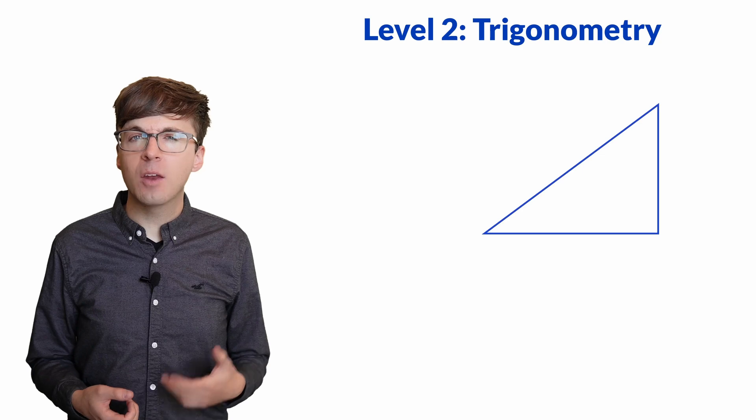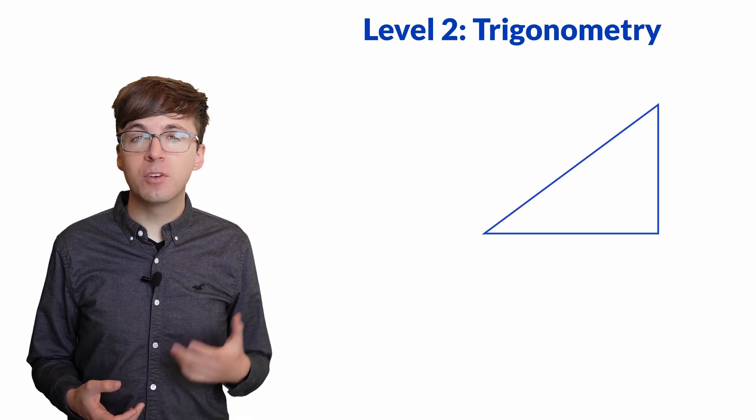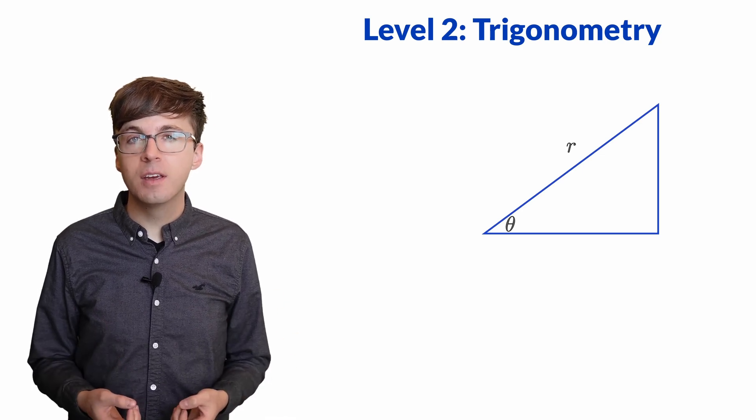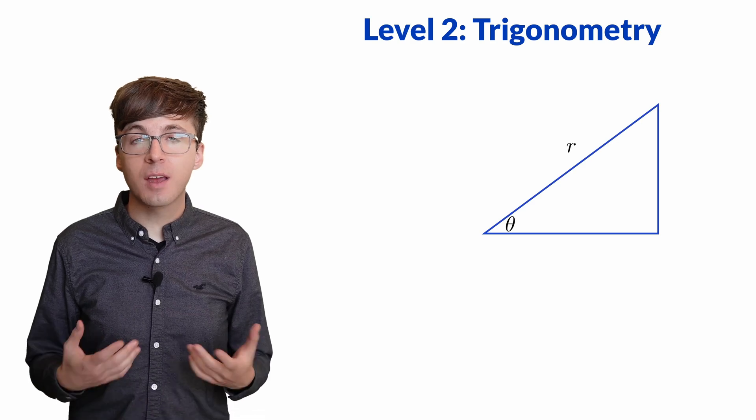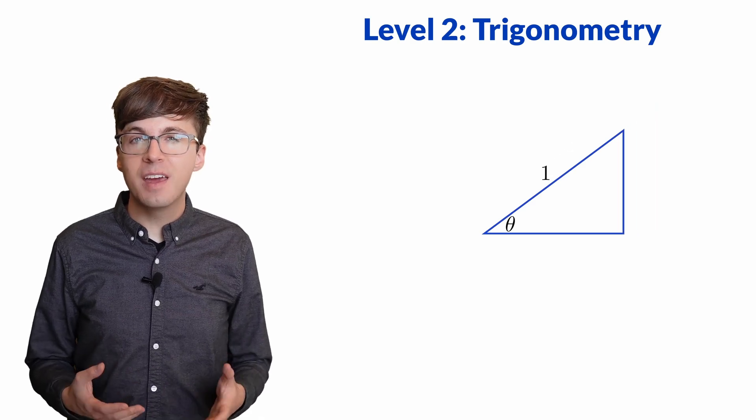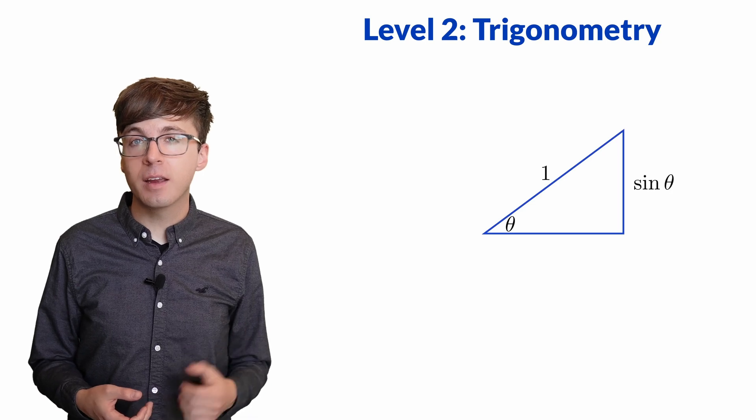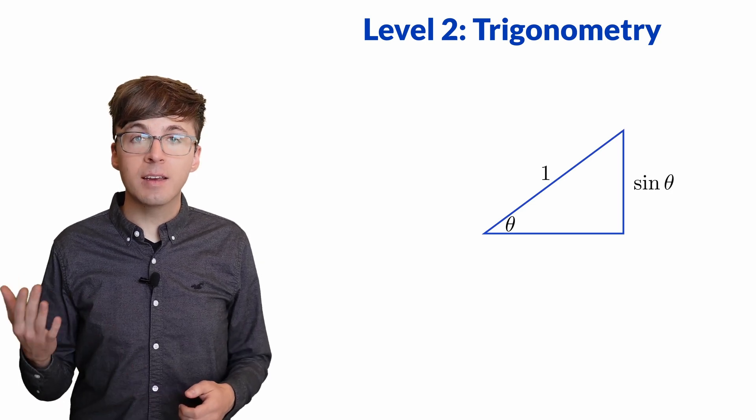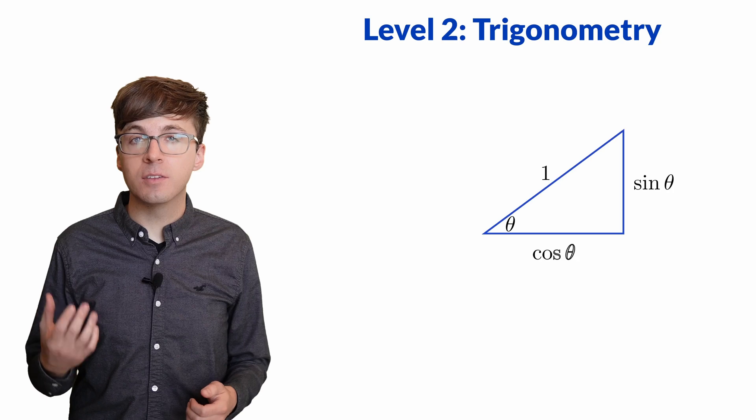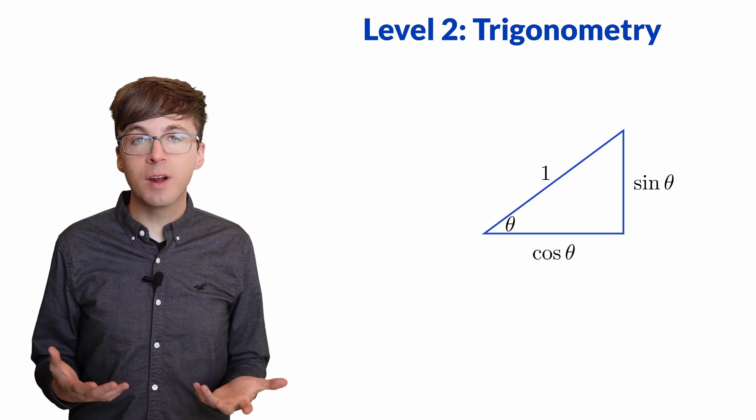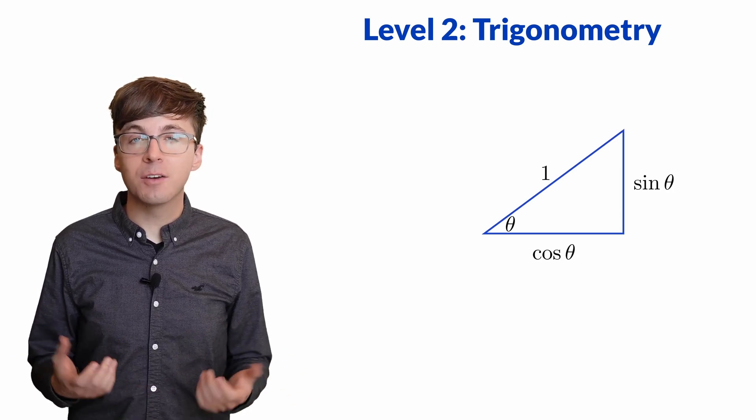We start with a right triangle, and we want to understand the relationship between its sides and angles. We can scale the triangle so its hypotenuse has length one. Then this side opposite to the angle is called the sine of the angle, and this side adjacent to the angle is called its cosine.